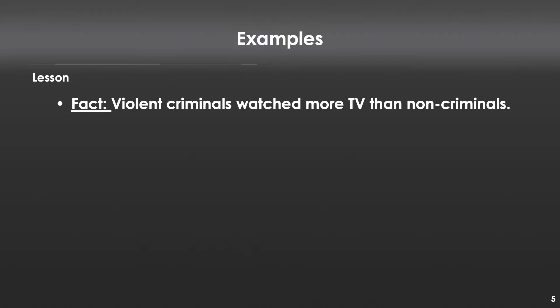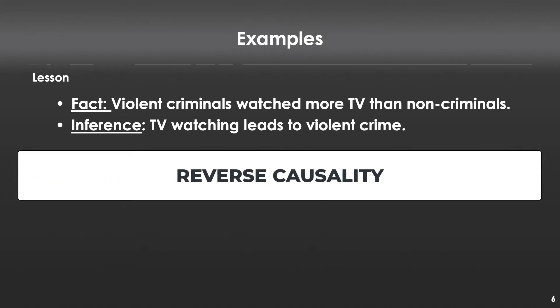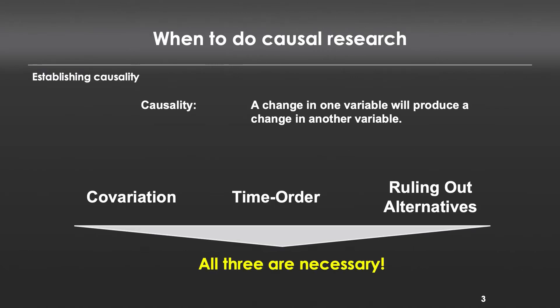So let me share a few fun facts that are true — you can't dispute them — and then put some inferences where maybe the inferences aren't quite correct. Our first fact is that violent criminals watch more TV than non-criminals. This is 100% true and well-documented. The inference is that TV watching causes violent crime. But that inference maybe isn't correct — it's not that TV viewing caused violent crimes, it's that people who commit violent crimes just tend to watch more television. One is not causing the other, so we cannot make that causal claim.